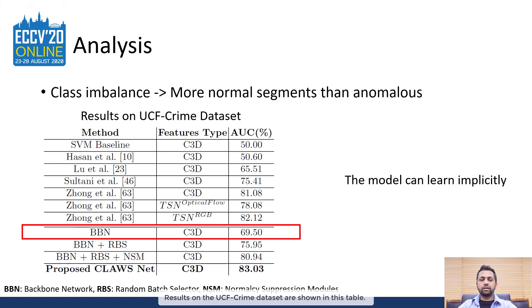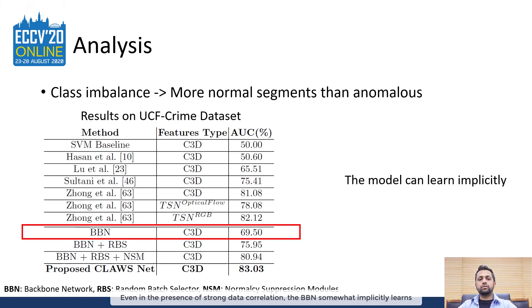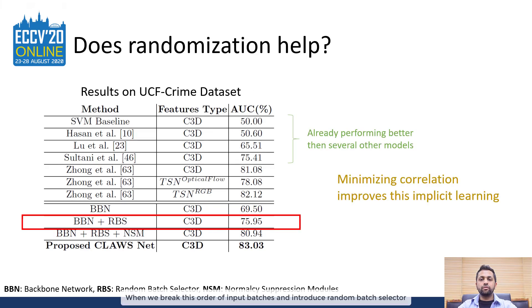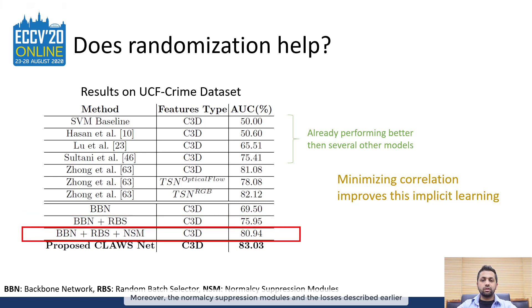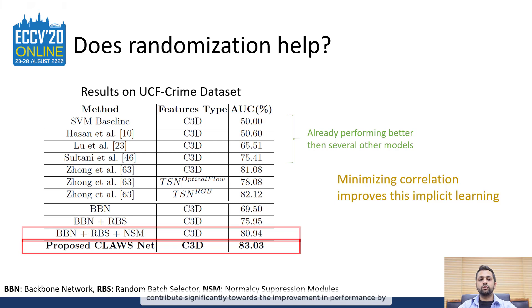Results on the UCF Crime dataset are shown in this table. It is interesting to observe the behavior of the backbone network training in which no randomization is used in the order of input batches. Even in the presence of strong data correlation, the backbone network somewhat implicitly learns to separate out anomalies by yielding 69.5% AUC on the UCF Crime dataset. When we break this order of input batches and introduce a random batch selector, the learning gets better. Moreover, the normalcy suppression modules and the losses described earlier contribute significantly towards the improvement in performance by enabling the overall framework to learn explicitly about anomaly discrimination.